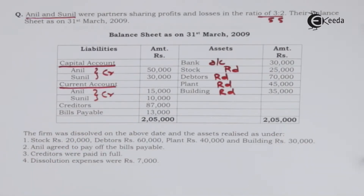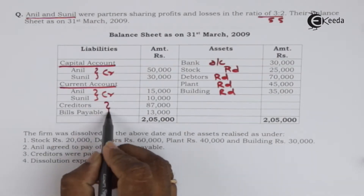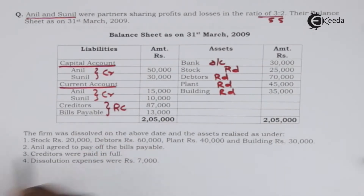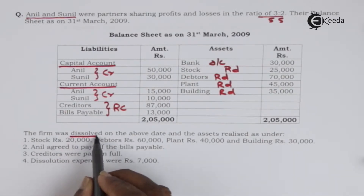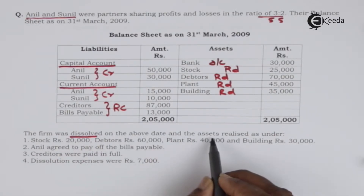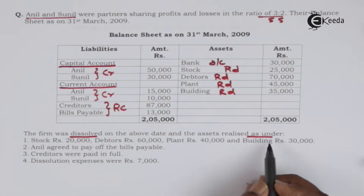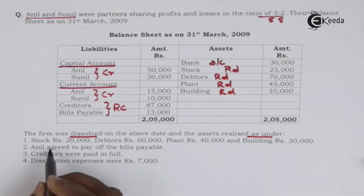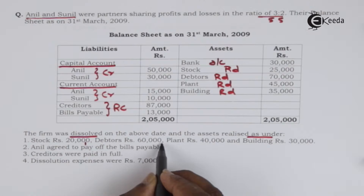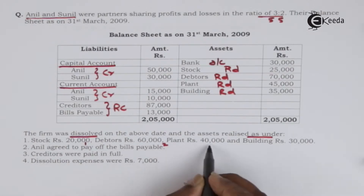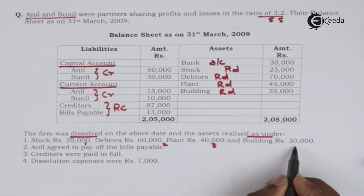Creditors and bills payable will be transferred to the credit of the realization account. The firm was dissolved on the above date and assets realized as follows: stock — 20,000; debtors — 60,000; plant — 40,000; building — 30,000.